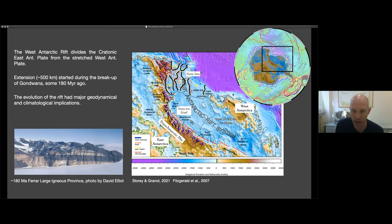The total amount of extension across the rift system is thought to be around 500 kilometers. And motion started at around the Jurassic time, around 180 million years ago, marked by the emplacement of the Ferrar large igneous province.